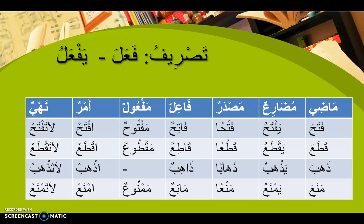The masdar is فَتْحاً (fatahan) meaning 'opening'. فَاتِحٌ (fatihun) is the fa'il - the one who opened. مَفْتُوحٌ (maftuhun) is the maf'ul - what has been opened. Because فَتَحَ is a muta'addi (transitive verb), it requires a receiver. The amr is اِفْتَحْ (iftah) - open! The nahy is لَا تَفْتَحْ (la taftah) - don't open!